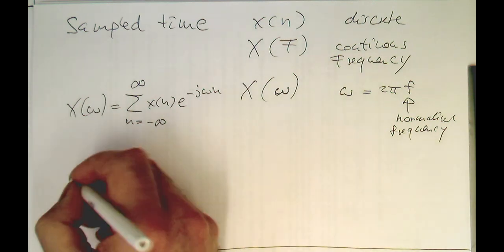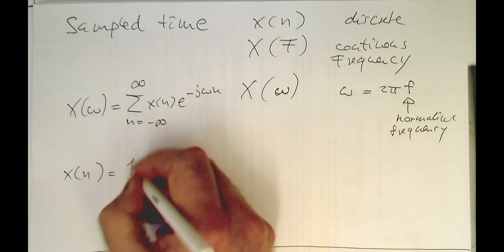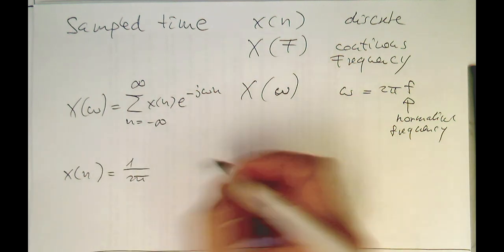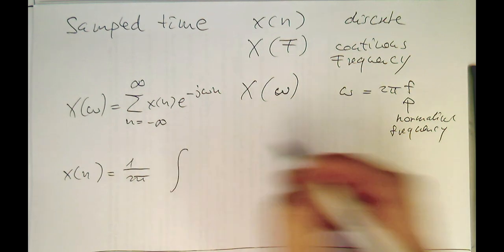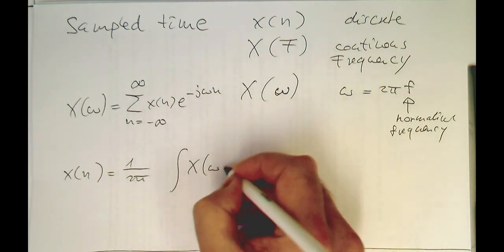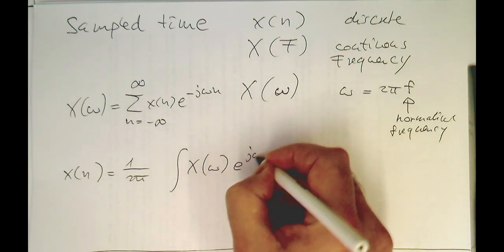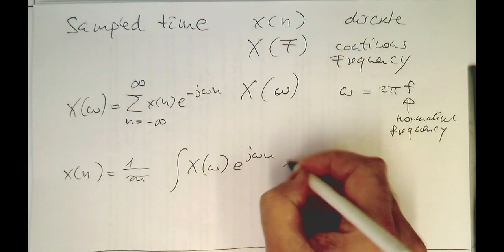So then the inverse x of n, so our inverse Fourier transform, then results into this here. Let's leave the boundaries here first open for the integral, because that's important. So e to j omega n d omega.